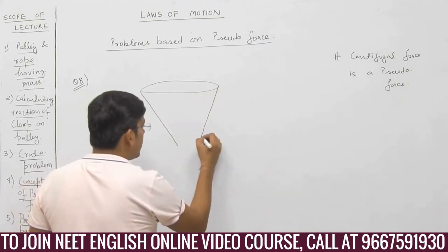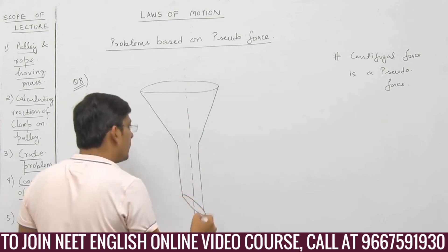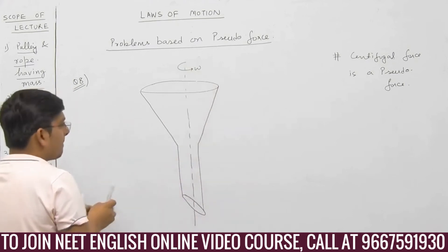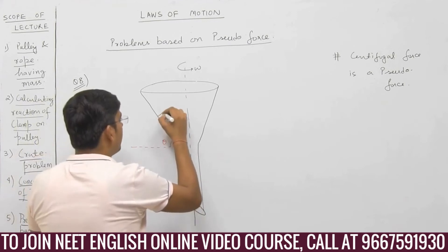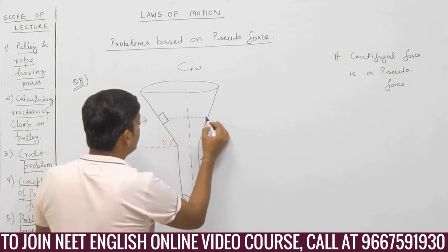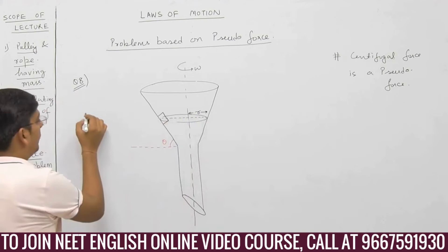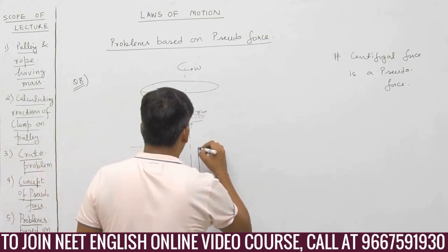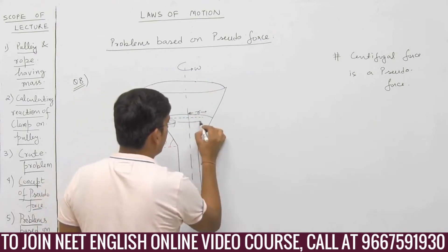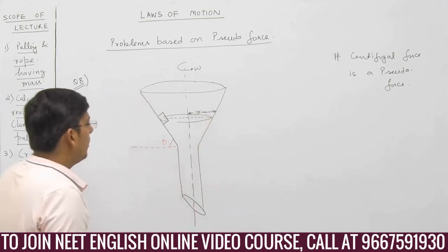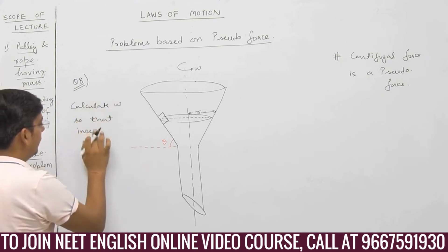This is also a very important question. We have a funnel rotating with an angular velocity omega. The inclination of the inclined surface of the funnel is theta. Suppose a block or insect is on it. At this instant, radius is small r. You have to calculate omega so that the insect does not slide down.